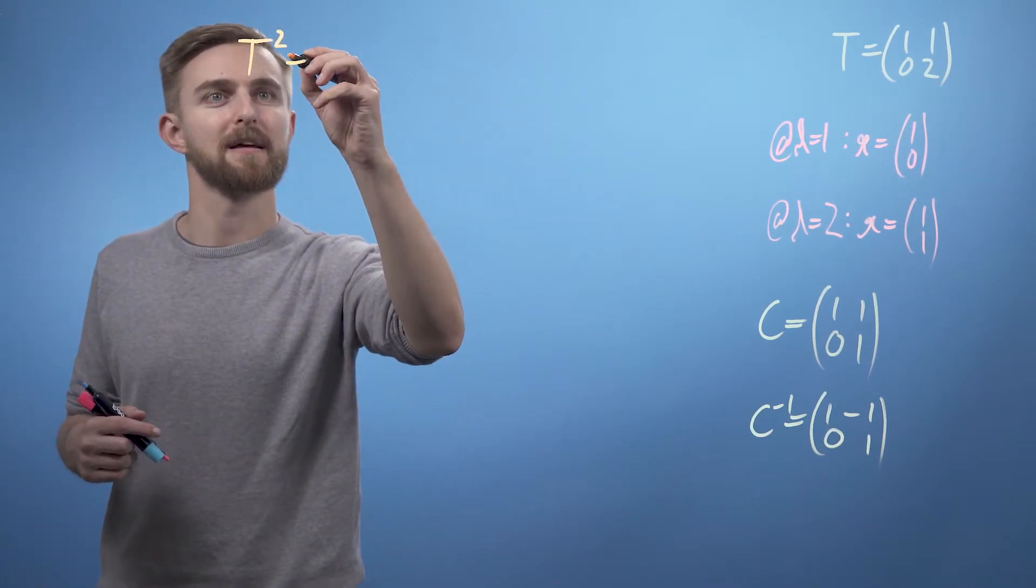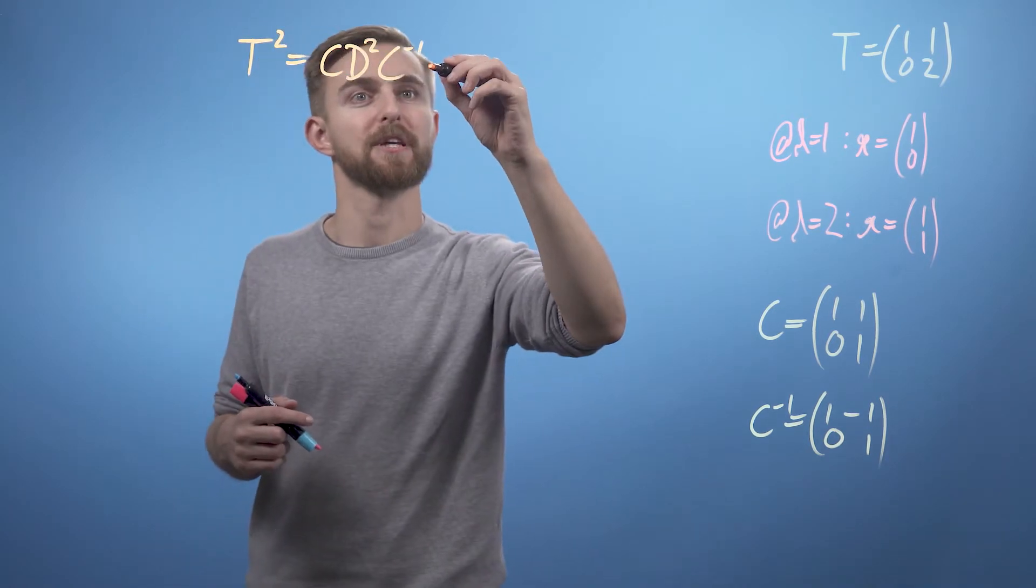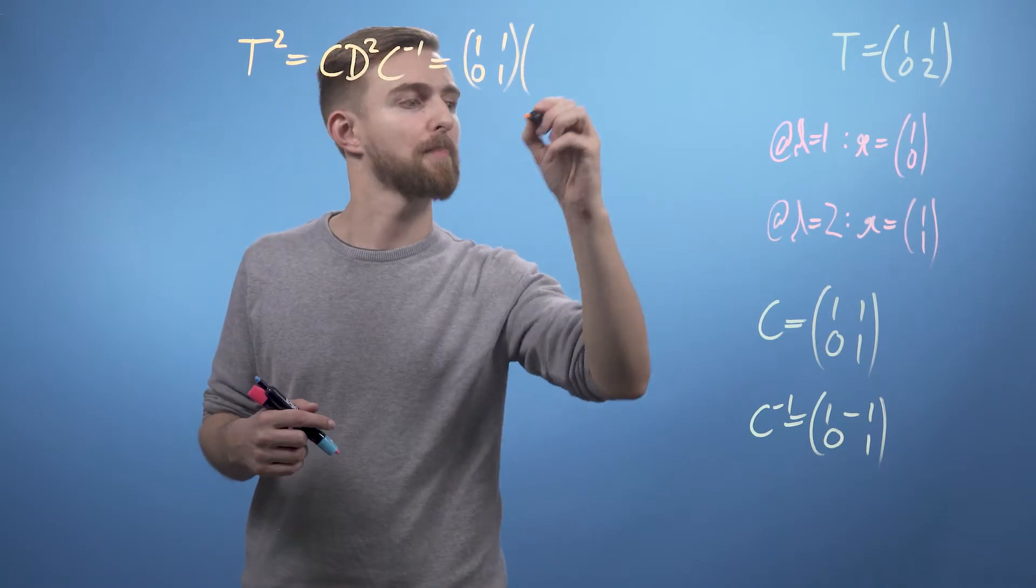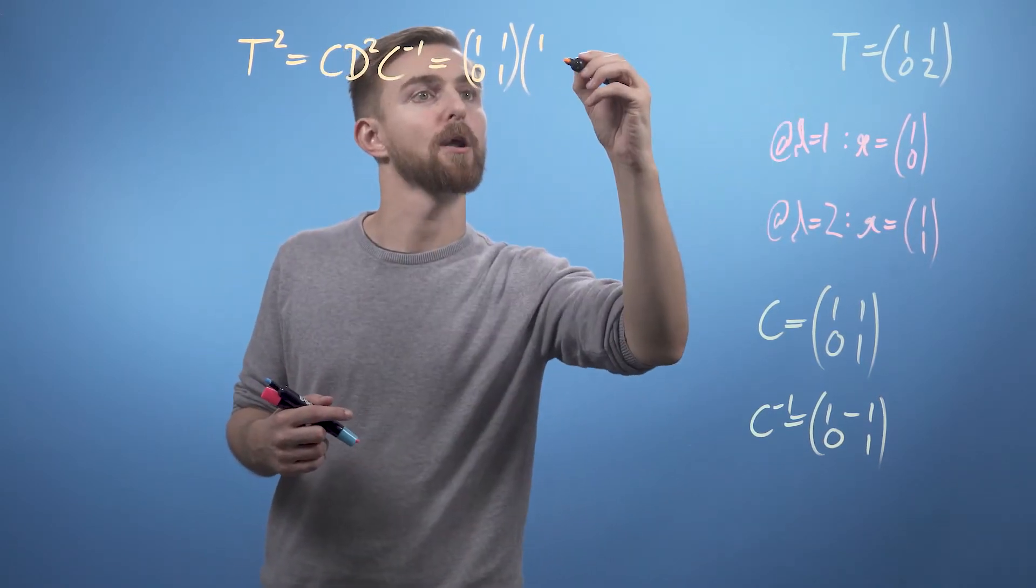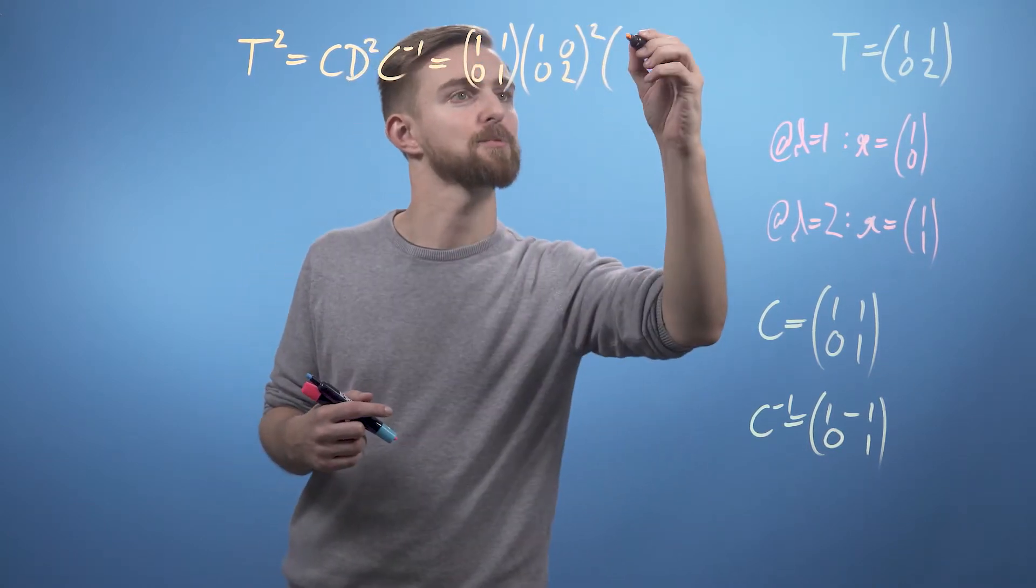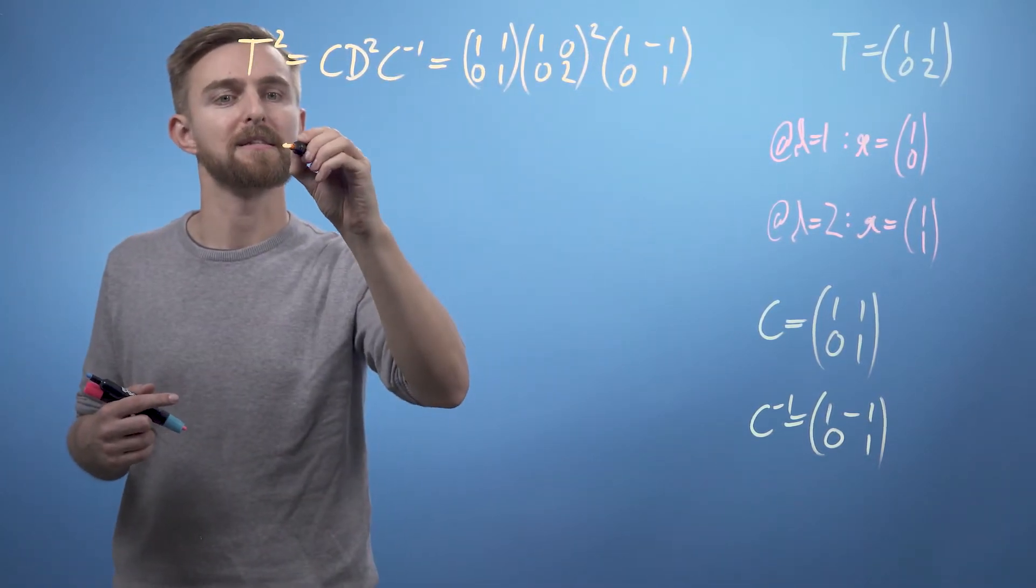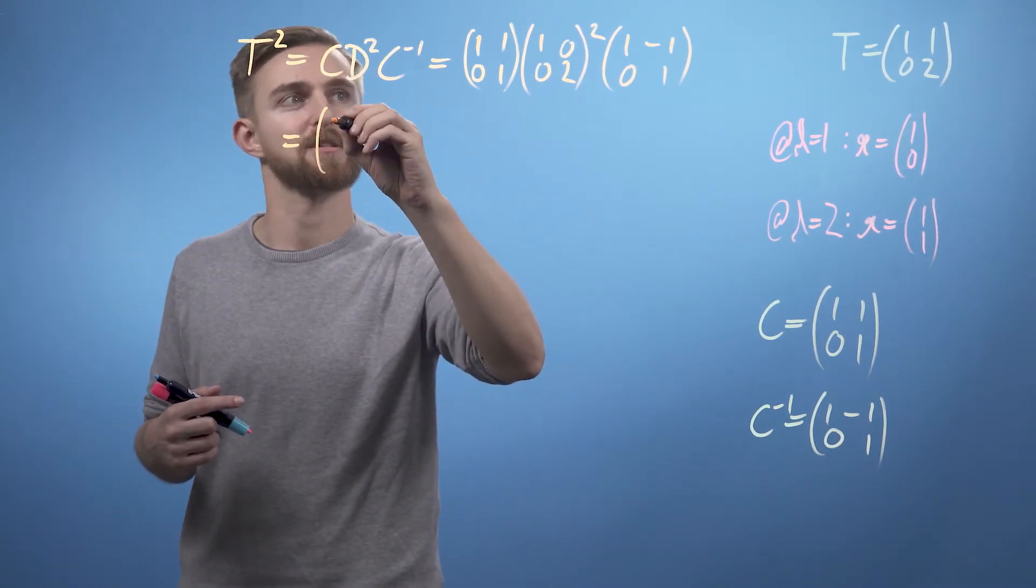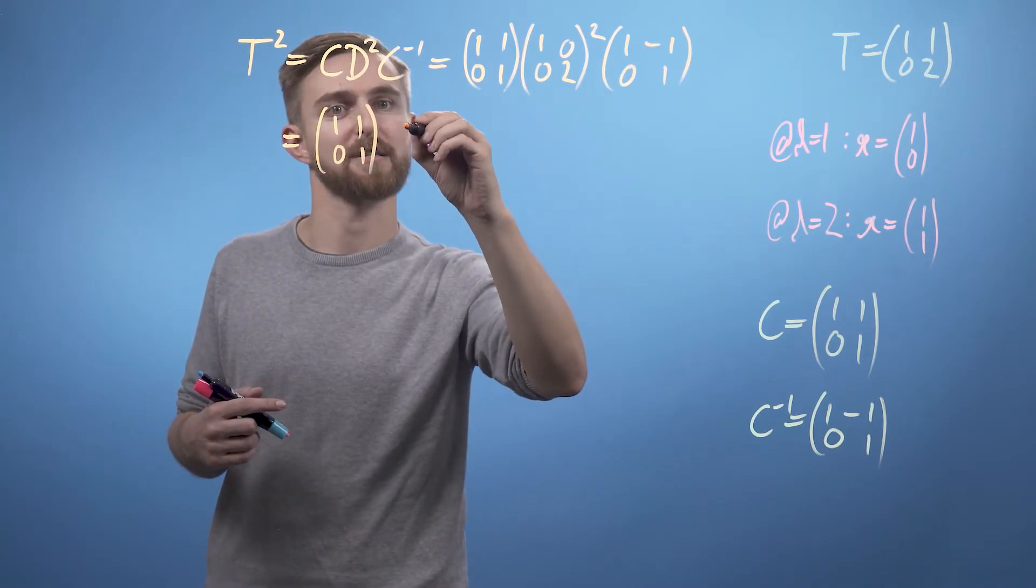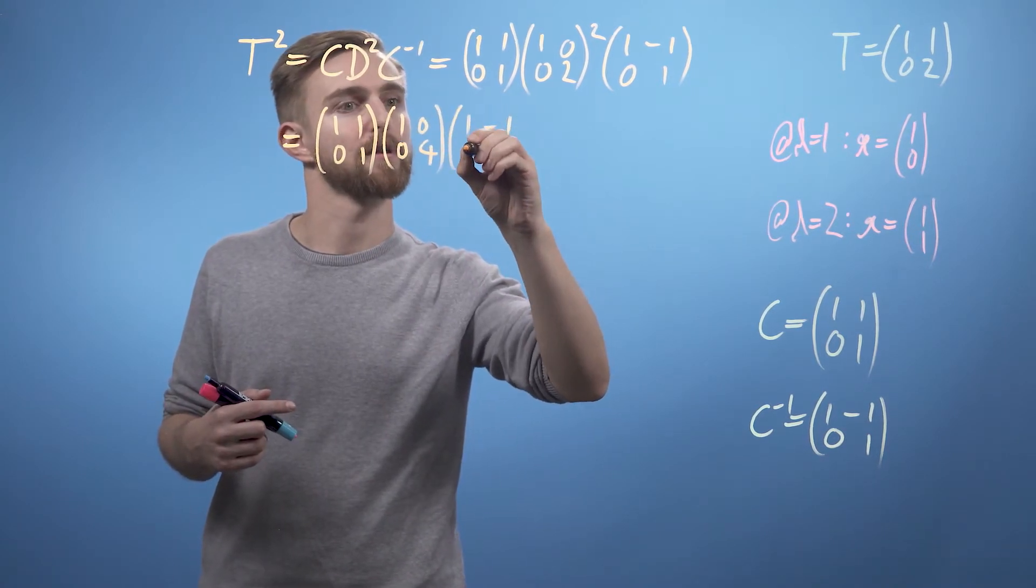We say T squared is going to equal C·D²·C inverse, which of course in our case is going to equal (1, 1; 0, 1) multiplied by our diagonal matrix, which is going to be (1, 0; 0, 2), and that's all squared, multiplied by C inverse, which is (1, -1; 0, 1). Working this through, we can see that, let's keep this first matrix (1, 1; 0, 1) and work out this bit. So we'll say, okay, this is going to be (1, 0; 0, 4) on the diagonal, times (1, -1; 0, 1).